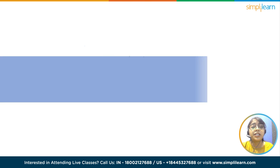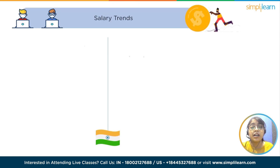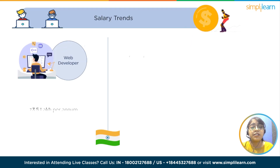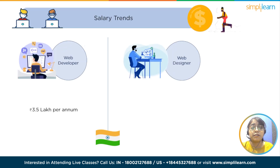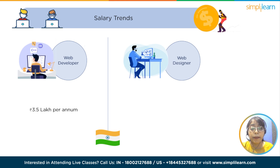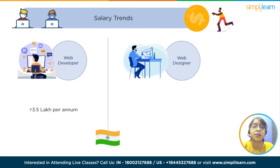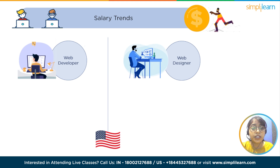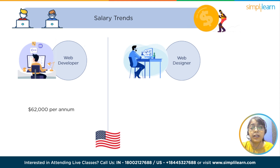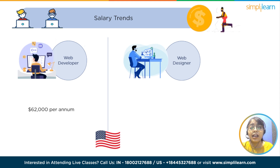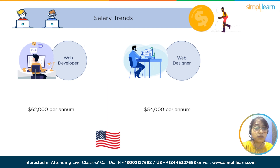When it comes to salary in India, the average salary of a web developer is nearly 3.5 lakh per annum, and a web designer is around 2.8 lakh per annum. In the United States, for a web developer it's nearly $62,000 per annum, and the average salary for a web designer is around $54,000 per annum.